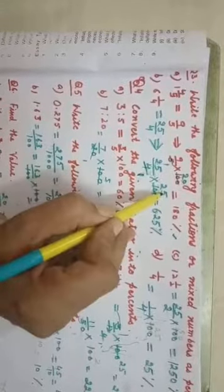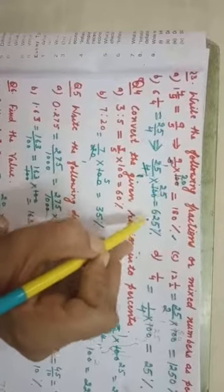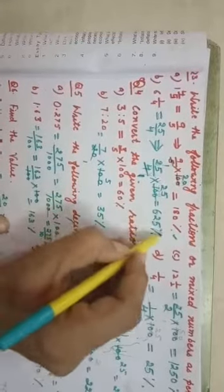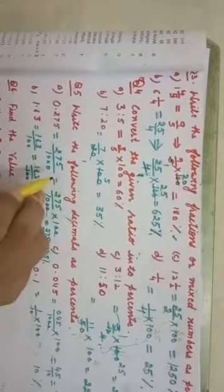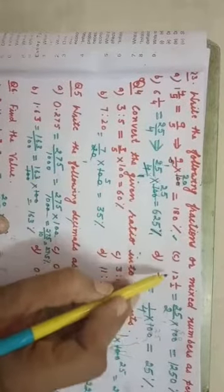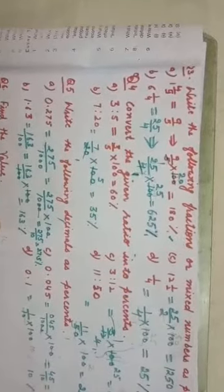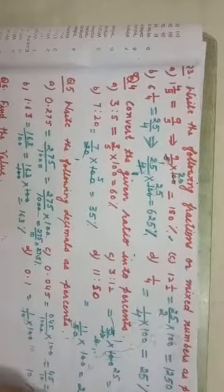We multiply 25 by 25, put the result, and add a percent sign. The answer for part b is 625%. Part c is 12 and 1 by 2 — you can check and solve this yourself in your sheet and send it.